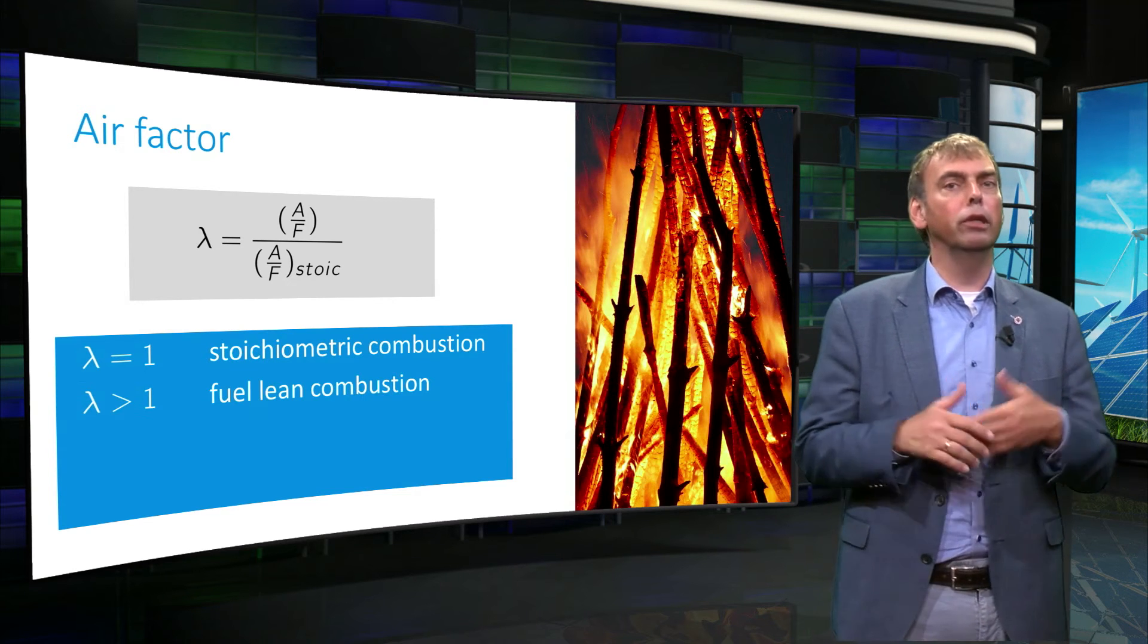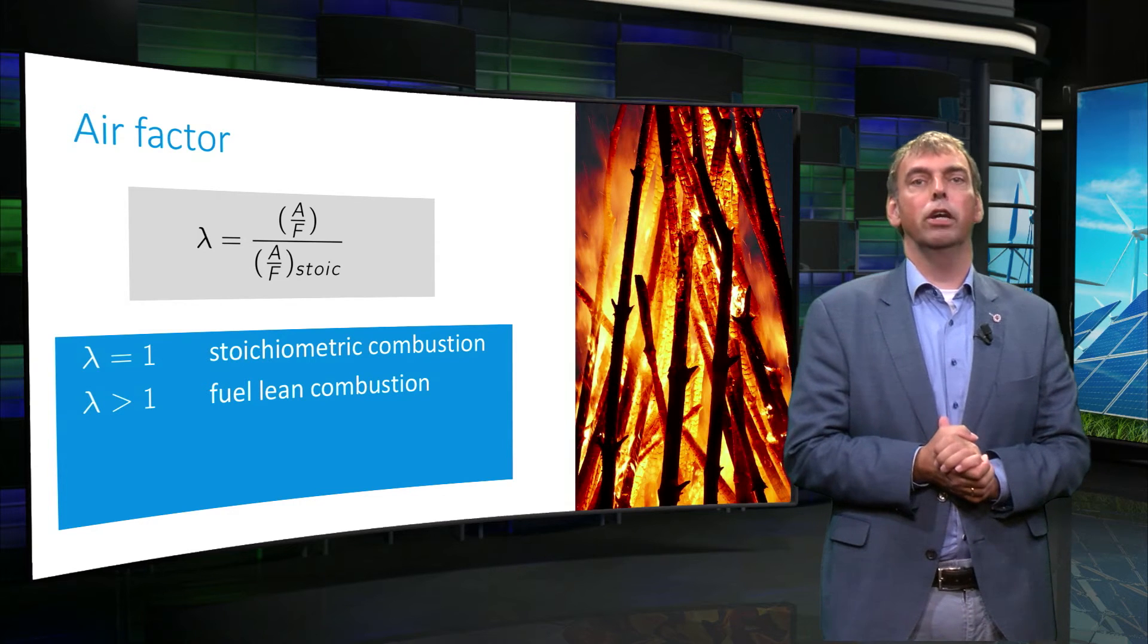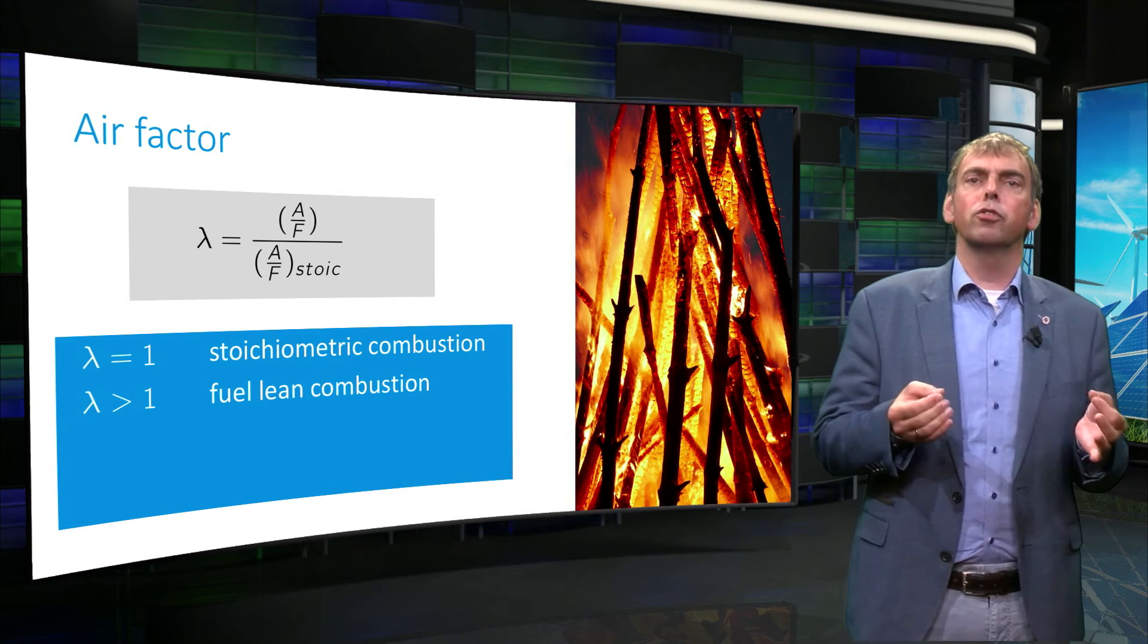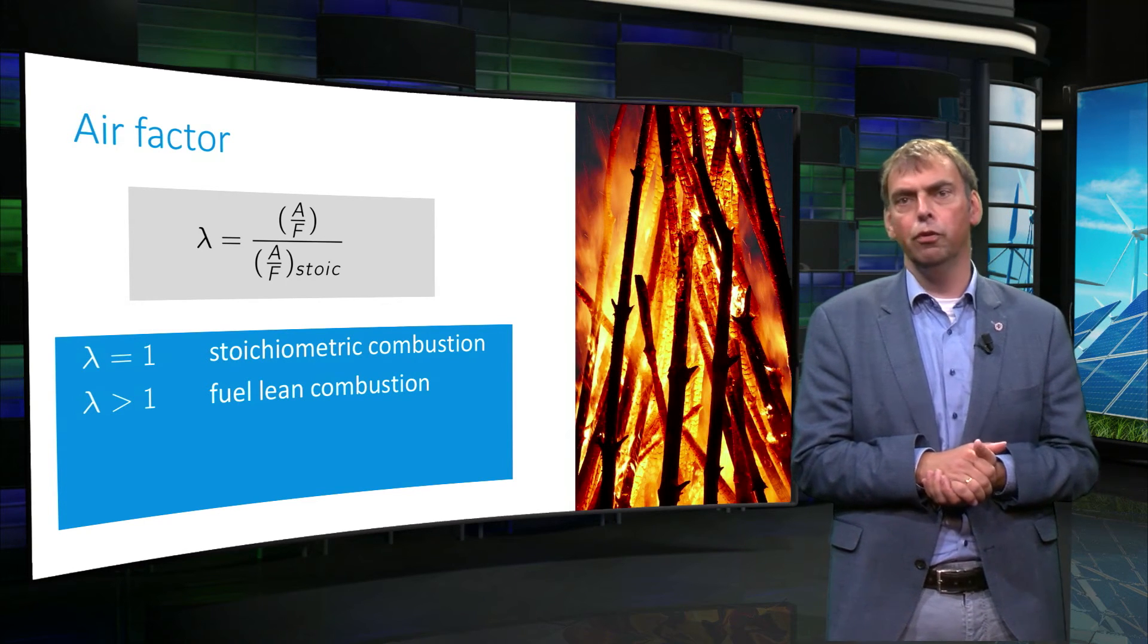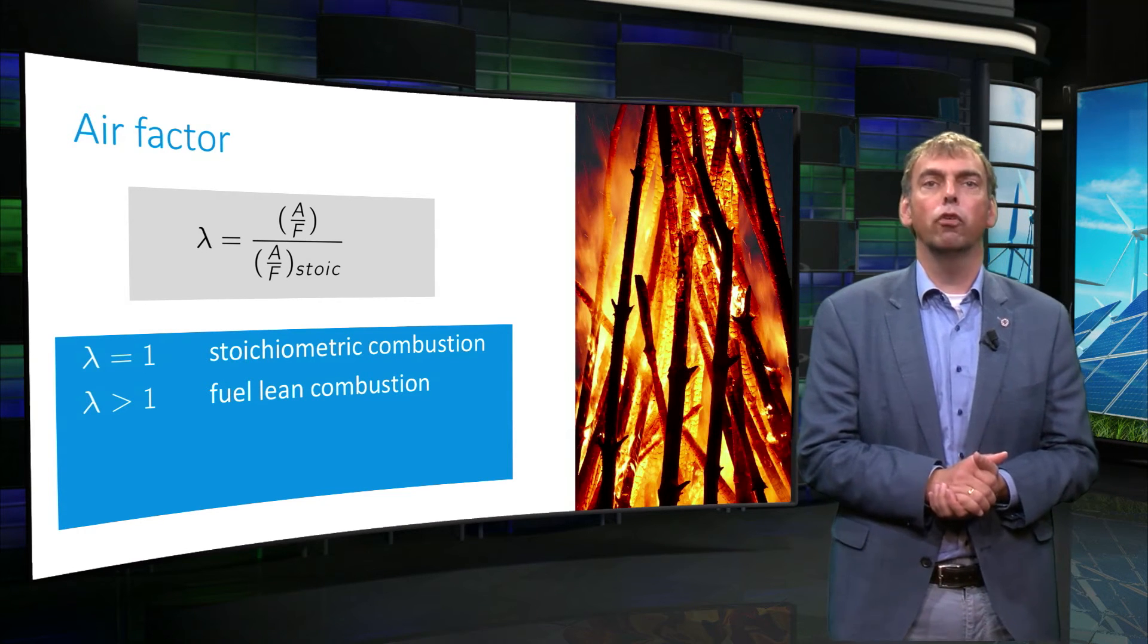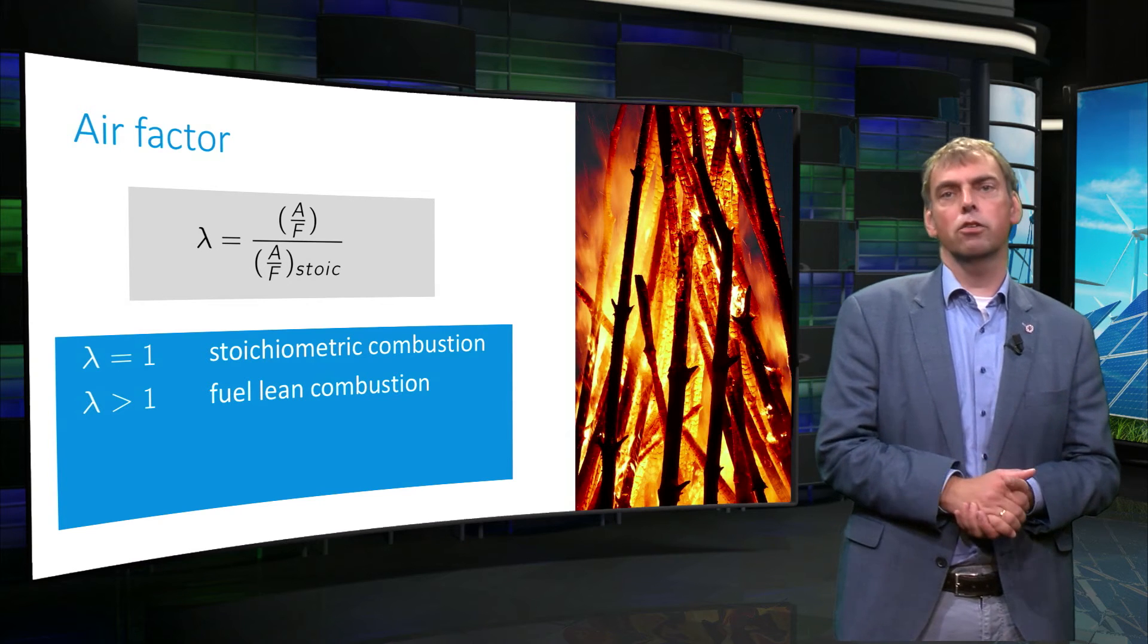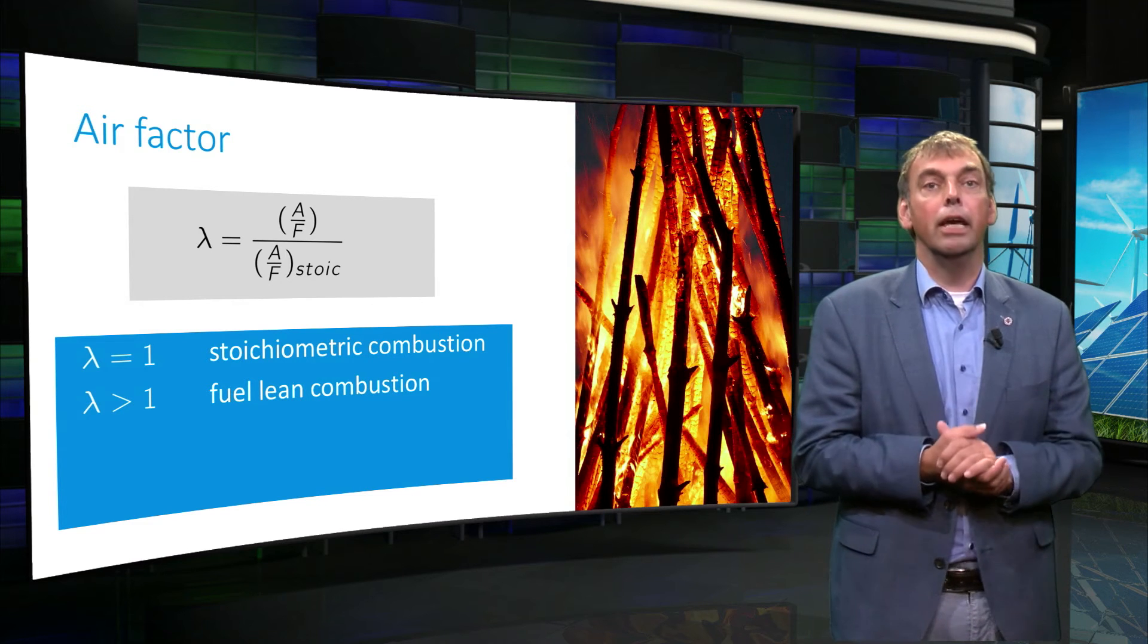One speaks about fuel-lean combustion when more oxygen is available for a reaction with the fuel than exactly needed for the stoichiometric combustion of each of the elements binding oxygen in the fuel. The generated combustion product stream is called flue gas. Because there is excess oxygen in the process, this flue gas will then contain oxygen.